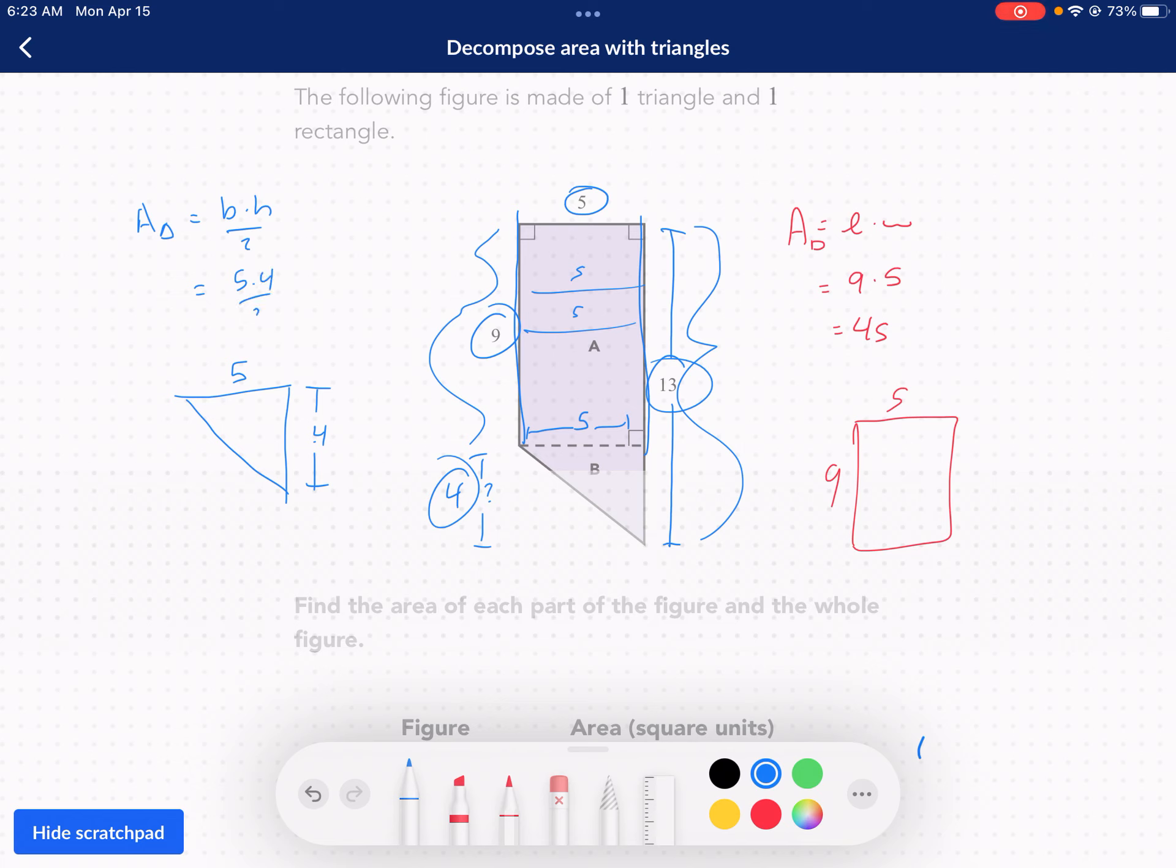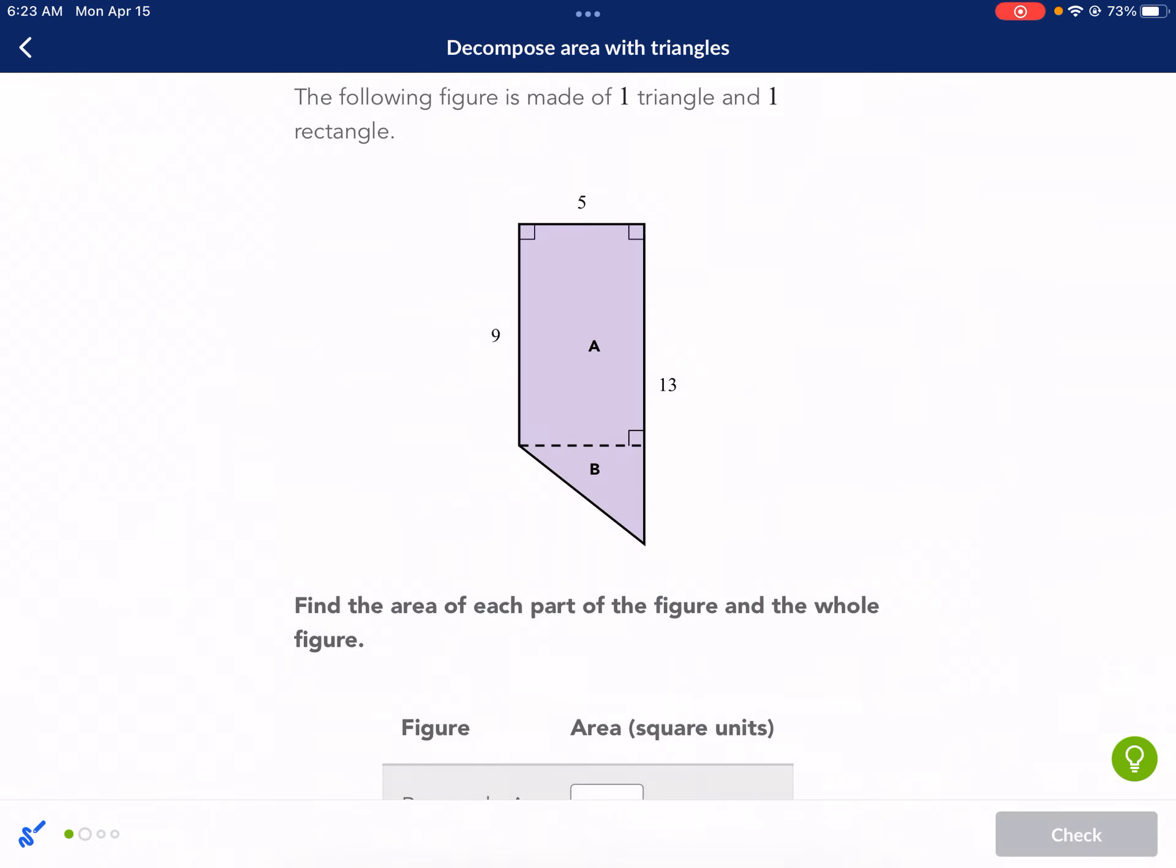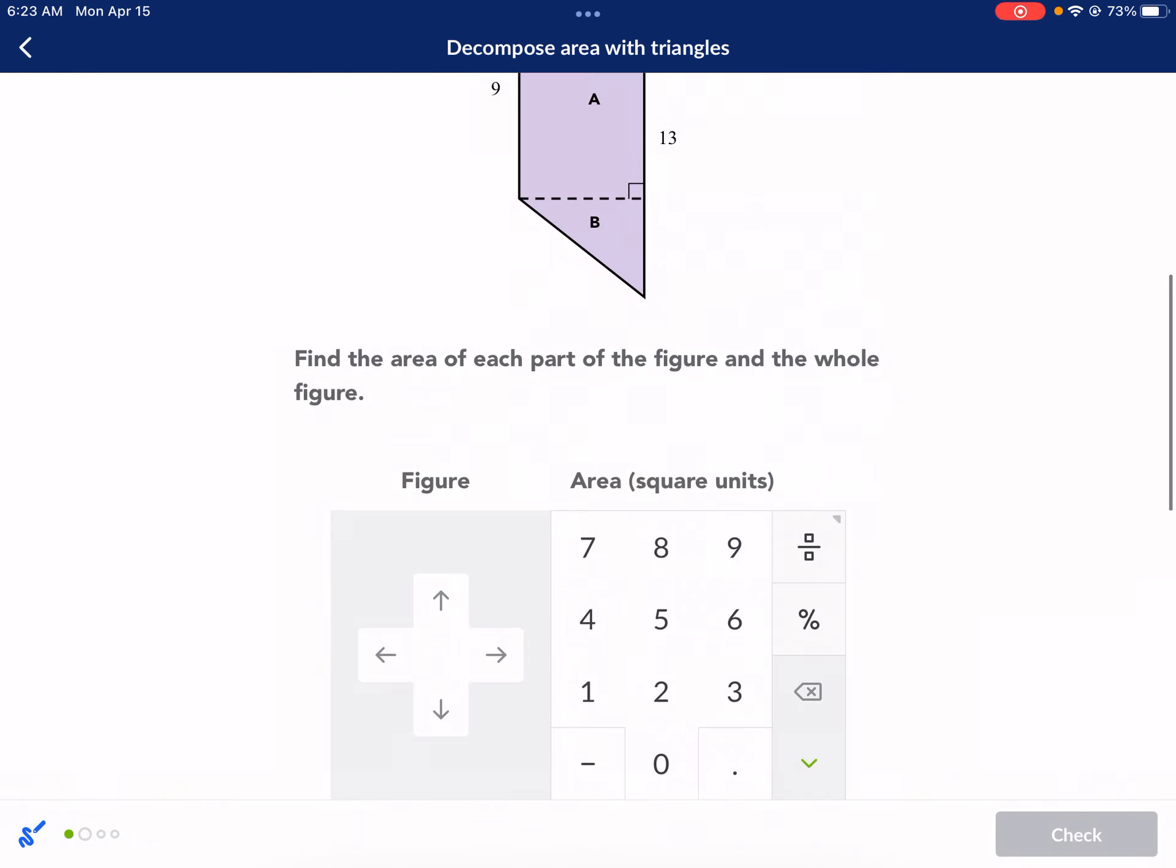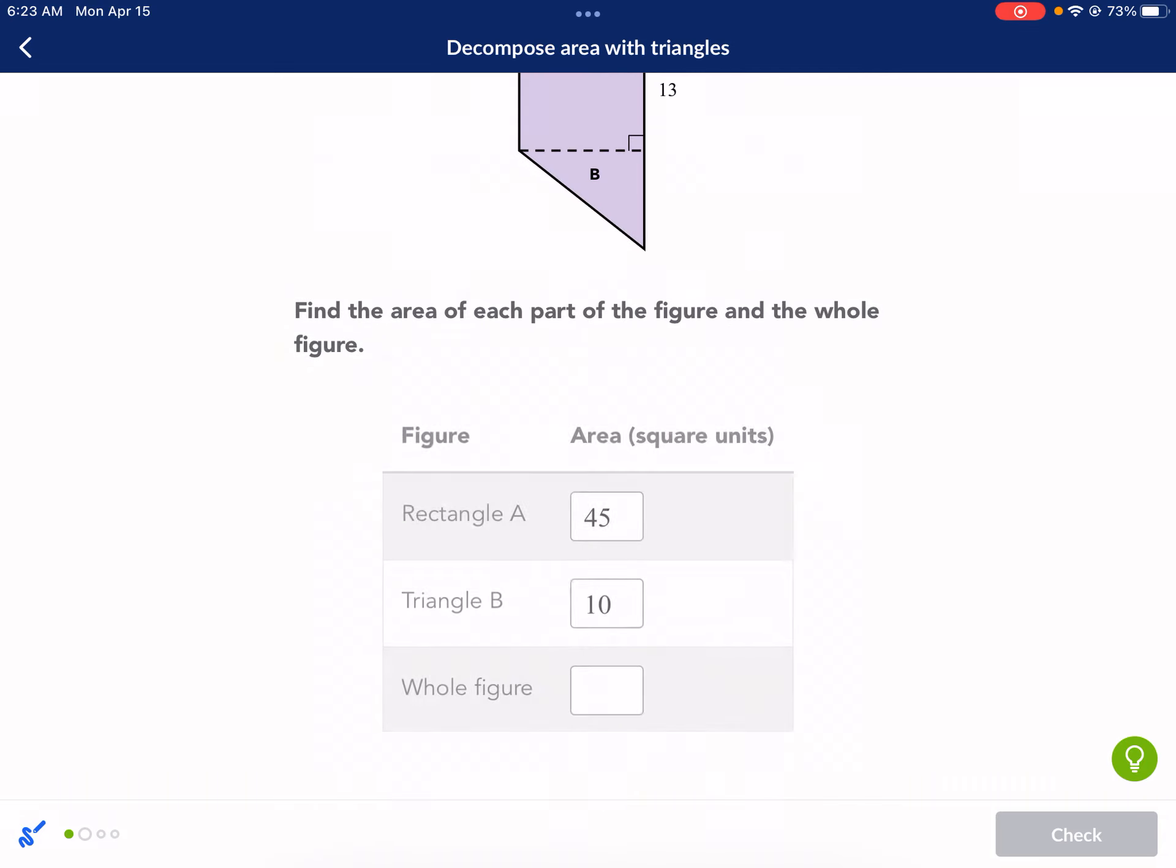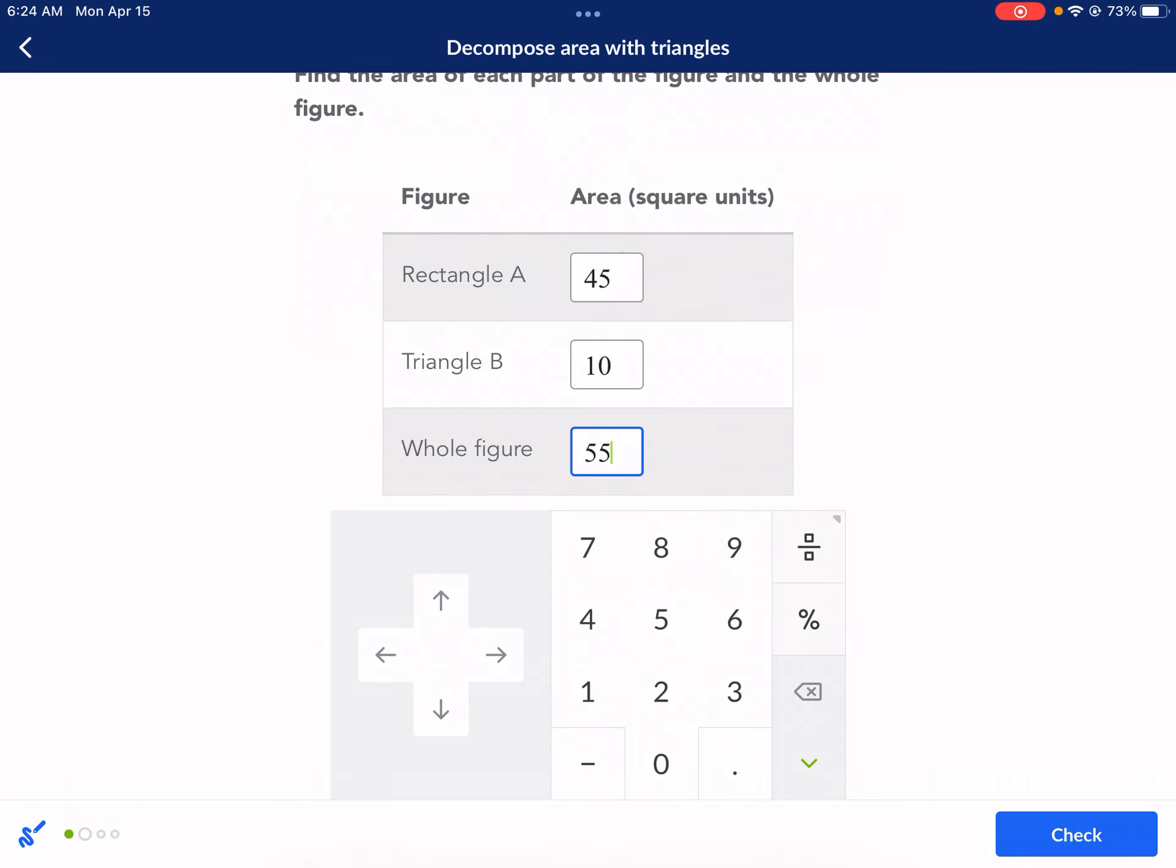Because nine plus four, right here, nine plus four is going to be equal to 13. Therefore, my height of my triangle is four. So, I'm going to do five times four divided by two. That's 20 divided by two. And that equals 10. So, now I have that my rectangle is 45. And then my triangle is 10. And I'm done. So, we have 45. I got 10. And then I can combine them to get 55 for the whole figure.